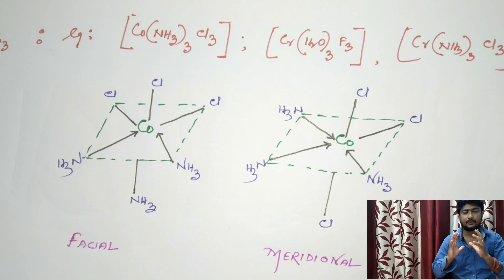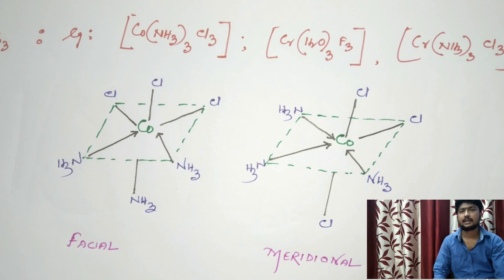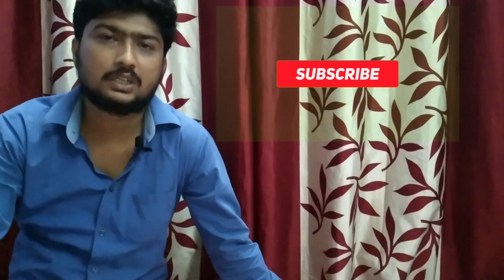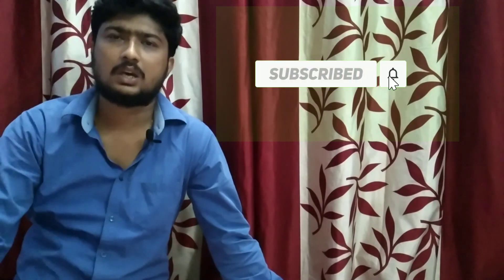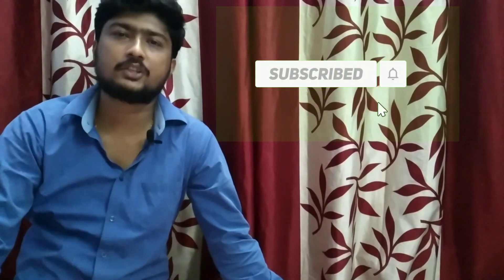Read all the topics thoroughly and write in your notebook. That's all for geometrical and optical isomerism. Students, how was the video lecture? Please let me know in the comment section and don't forget to subscribe to my channel. Thank you.